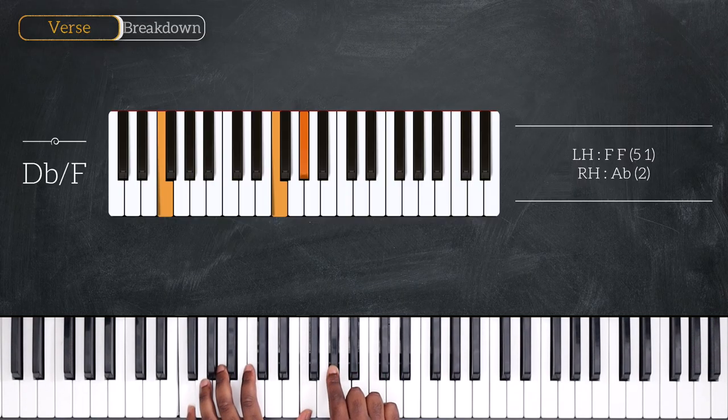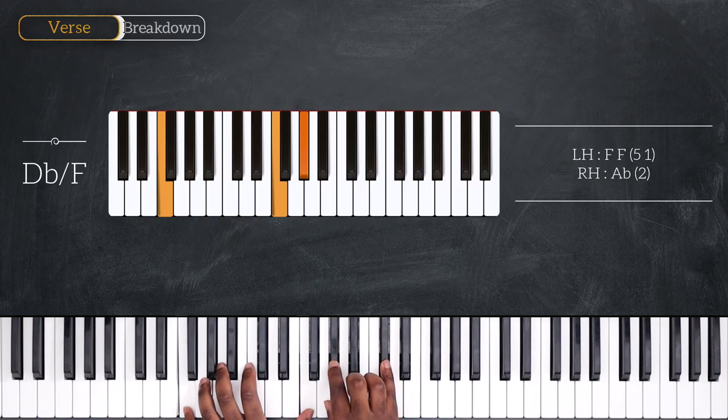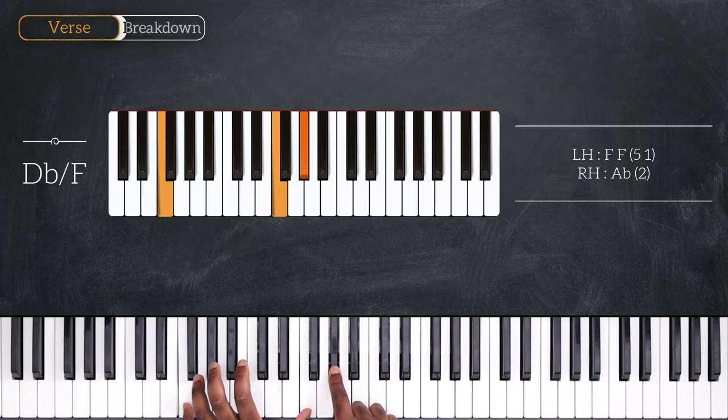That's Db over F, even though I'm not playing Db up here. Okay? So, octave F on your left with Ab right hand.